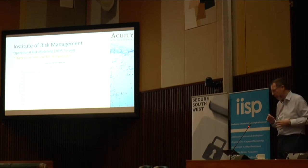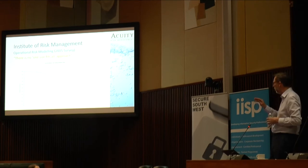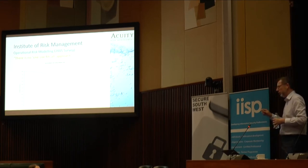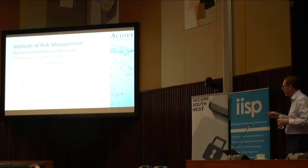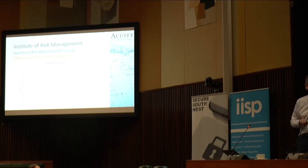When we report in this way, at the top we have our quantitative loss exceedance curve showing where we sit at the moment, and the dotted line shows what management is prepared to accept. You can see there's a huge gap between the two — so we need to do something about that.